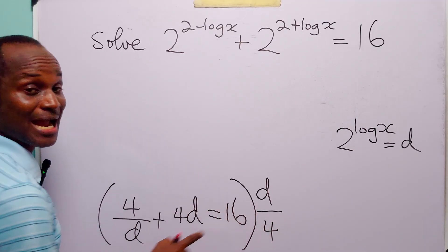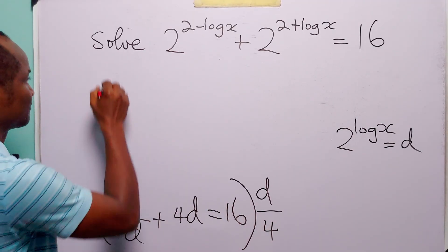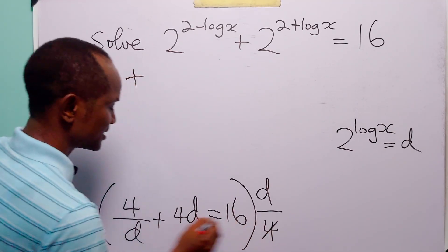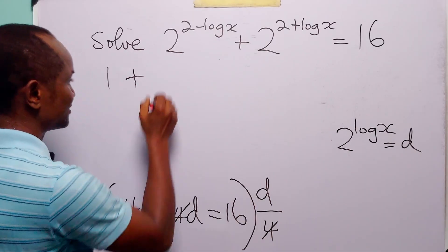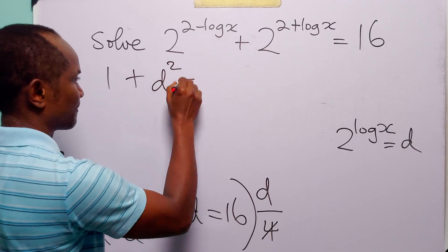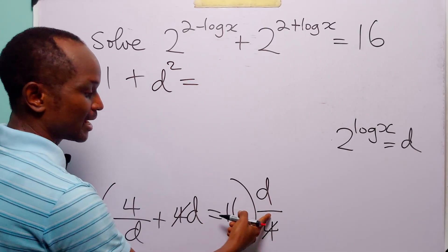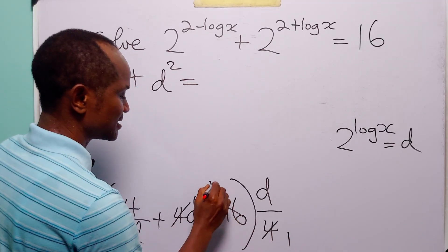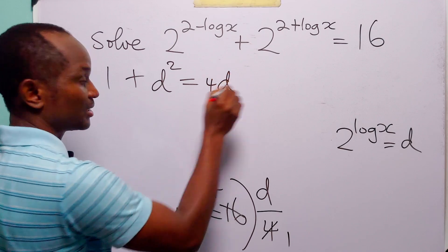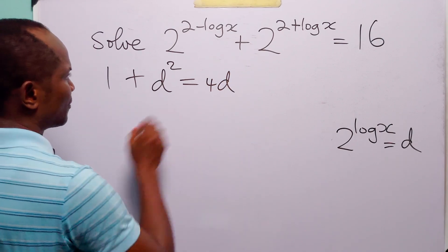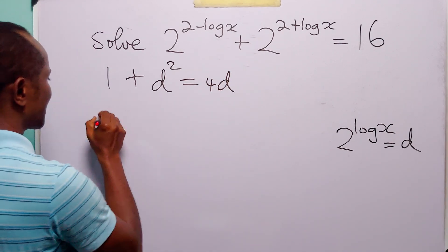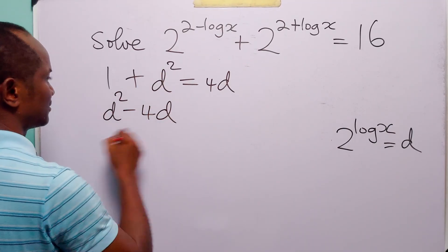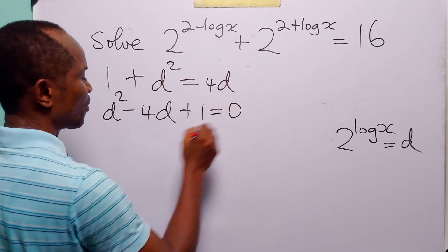4 over d multiplied by d over 4 is 1. 4d multiplied by d over 4 leaves us with d times d, which is d squared. 16 multiplied by d over 4 gives 4d. When we rearrange this equation, we have d squared minus 4d plus 1 is equal to 0.